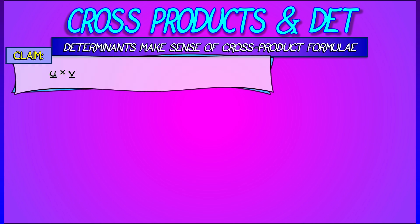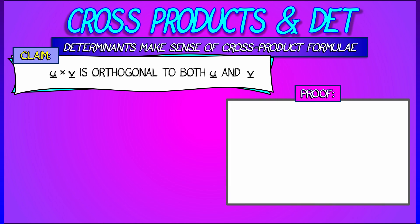Remember, back when we did the cross product, we showed that u cross v is orthogonal to both u and v. Let's look at this from a determinants perspective from a different point of view.